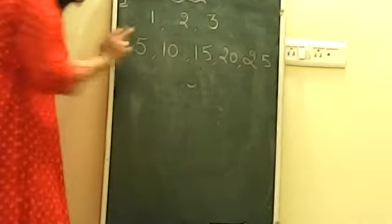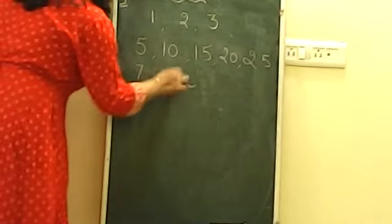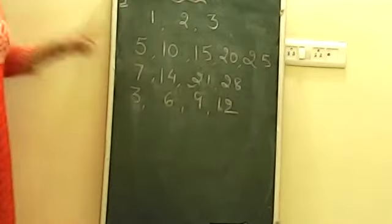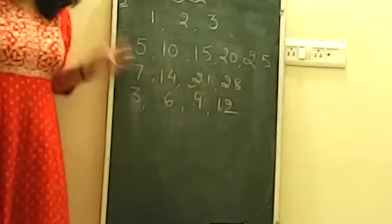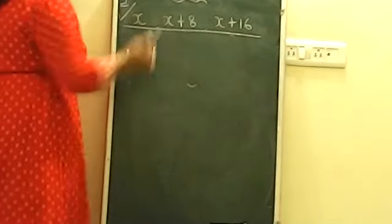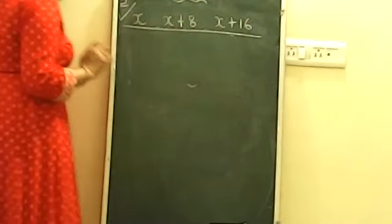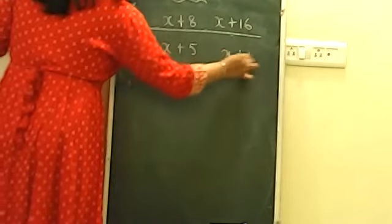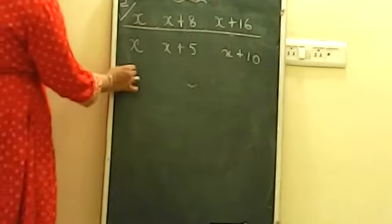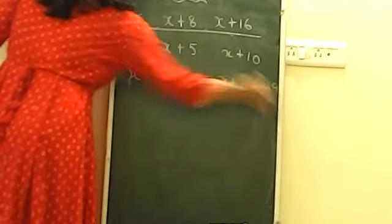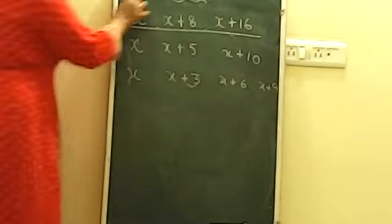Now let us understand the algebraic pattern. For multiples of 8, you choose x, then x+8, then x+16. For multiples of 5: x, x+5, x+10. For multiples of 3: x, x+3, x+6, x+9 — depending on how many you need. Since our question is about multiples of 8, we take x, x+8, and x+16 for the three consecutive multiples.